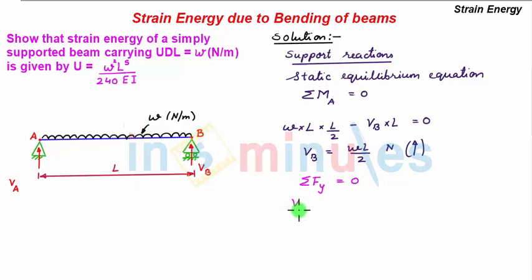So we have two upward forces Va plus Vb and the downward force is this UDL of intensity W acting for a span L. So we have minus W times L and summation of all this vertical force is equal to 0.